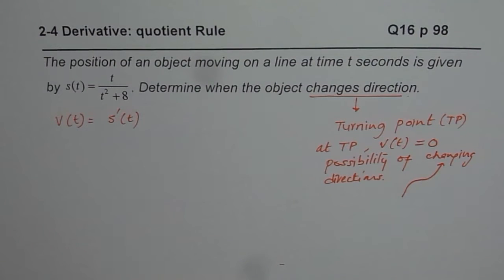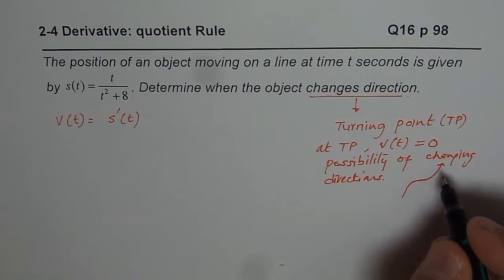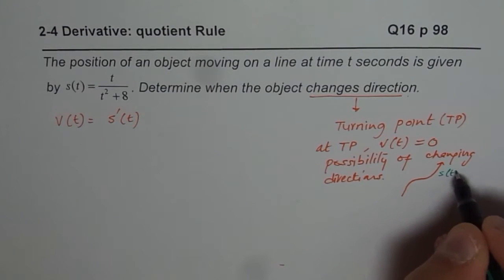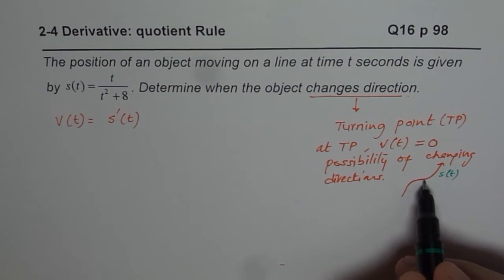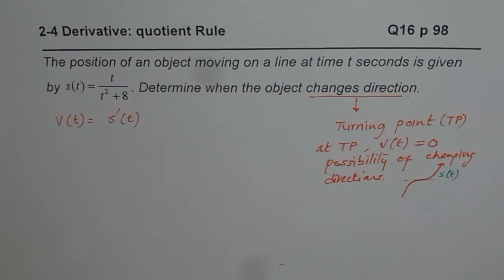That is displacement graph. So, I am just showing you a displacement graph s(t). Here, if you find horizontal tangent here, it necessarily will not show you change in direction.